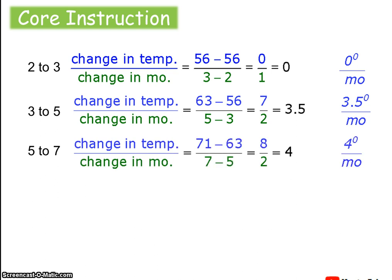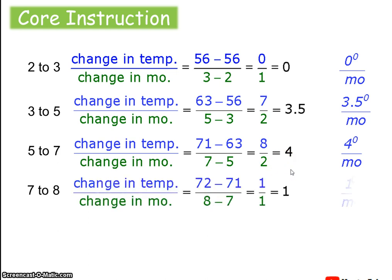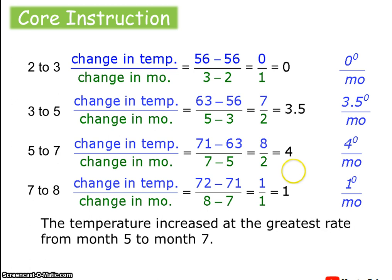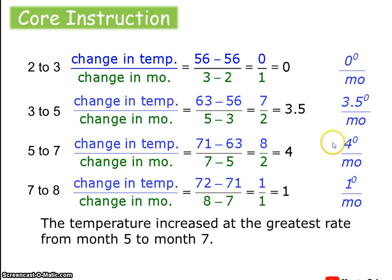Averaging that gives us 3.5 degrees Fahrenheit per month. From month five to seven, that's over two months, the temperature changed from 63 to 71 — eight degrees over two months, an average of four degrees per month. From month seven to eight, we get one degree per month. So the temperature increased at the greatest rate from month five to seven at four degrees per month, with a lot of variation in this data from no change at all to four degrees, then 3.5, then one.